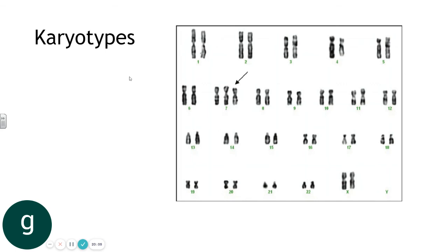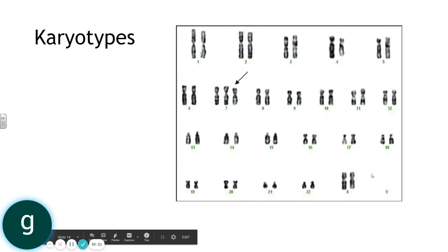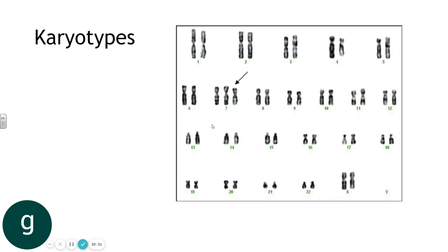Karyotypes are images of an individual's homologous chromosomes lined up and help diagnose chromosomal conditions. Normally you should have one copy from each parent; if you see three copies at a particular chromosome — a trisomy — that indicates a genetic condition. Trisomy 21 is Down syndrome; trisomy 13 is Patau syndrome; trisomy 18 is Edwards syndrome, among others.